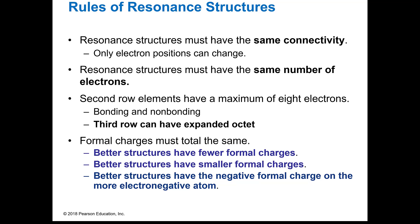Resonance structures have to have the same connectivity. They have to be connected the same way but the electrons can be in different places. They also have to have the same number of electrons. If we can't tell which one is the best structure, then we use formal charge.